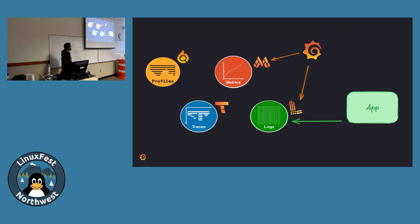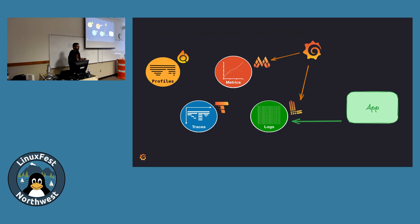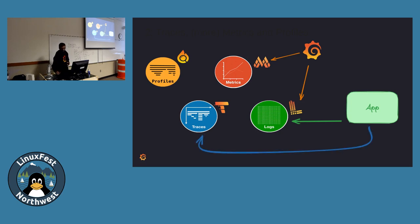Now we come to traces. Traces is basically logs-plus. At a particular event in your application — say a crash — traces help you identify not just what happened but at which particular time and which span it occurred. Traces are valuable when your application has that complexity; sometimes you don't need them. It depends on your application. Grafana can read traces as well.